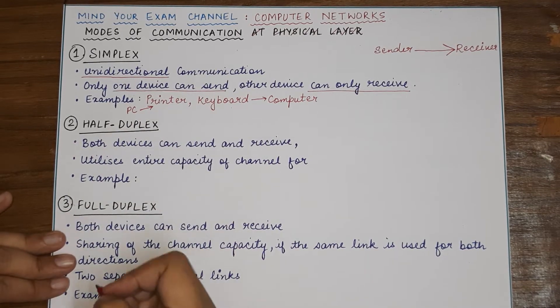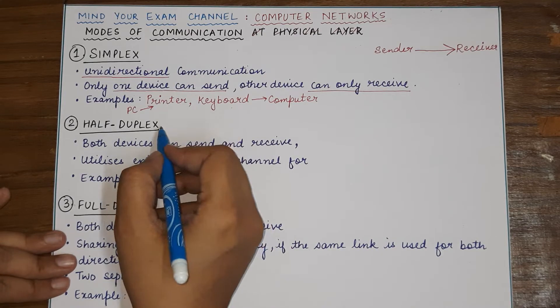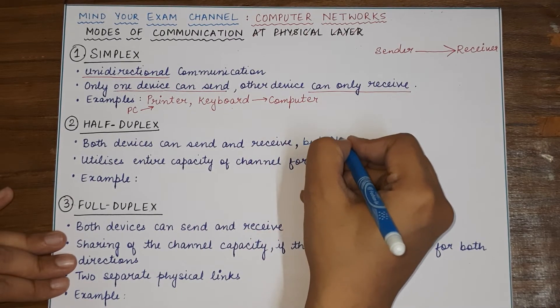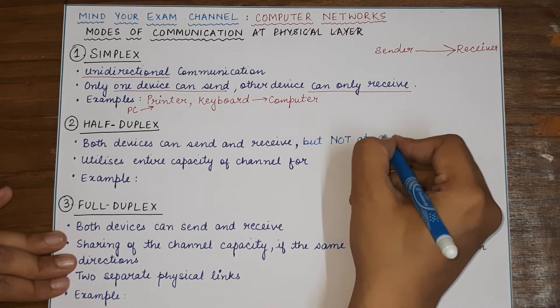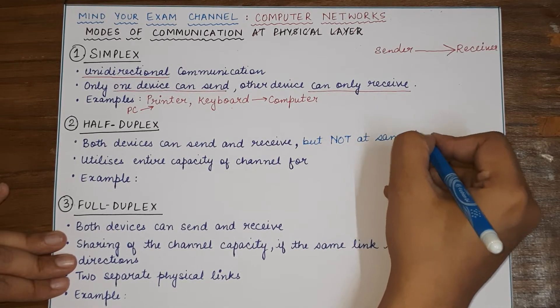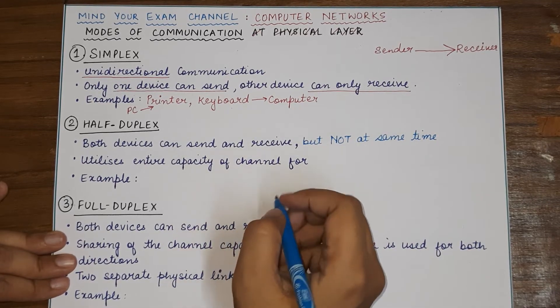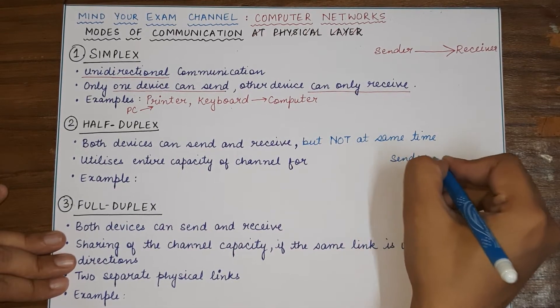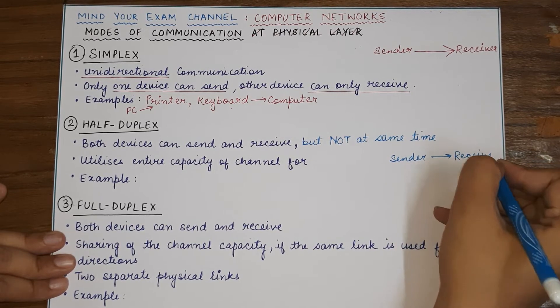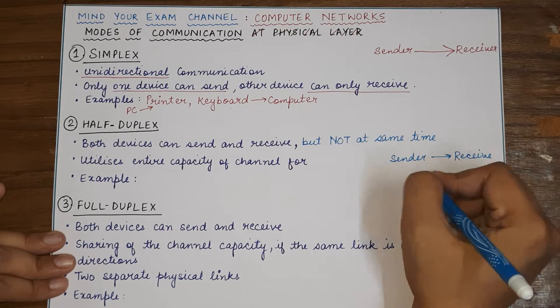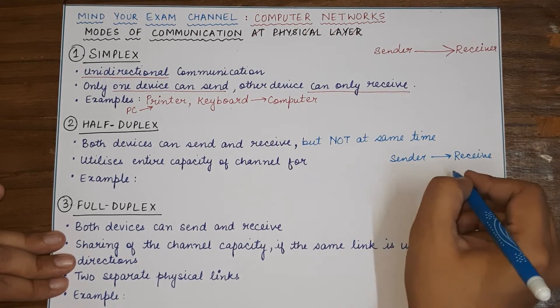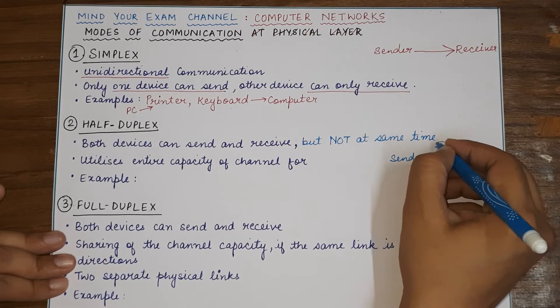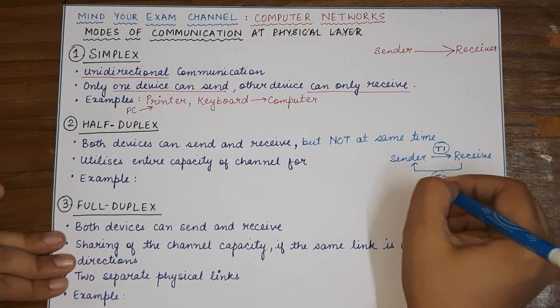The next is the half-duplex connection. In the case of half-duplex communication or connection, both the devices can send and receive the data but not at the same time. When one device is sending data, the other can only receive. Whereas, when the second device is sending data, the other device will only act as a receiver. So, if I say it like sender can send information at one point of time but it cannot receive information at the same time. And if receiver wants to receive, the data can be sent in this direction also. But this time will be completely different. This has to happen at two different time moments.